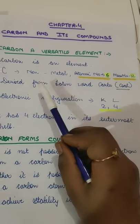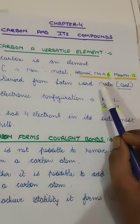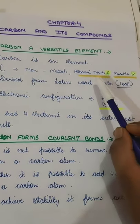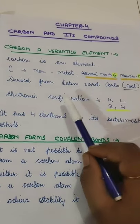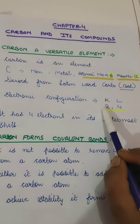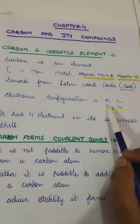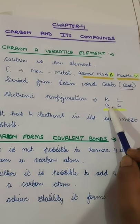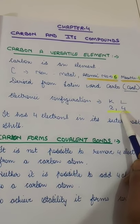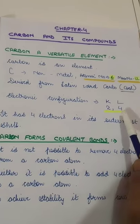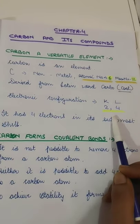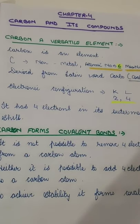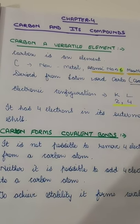The name carbon is derived from a Latin word 'carbo,' which means coal. Since it has atomic number 6, its electronic configuration is 2 and 4, because in the K shell the maximum number of electrons is 2 and in the L shell it is 8. But since it has only 6 electrons, the outermost shell has just 4 electrons, which gives carbon a unique property that we will be covering in today's lecture.